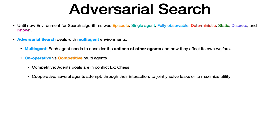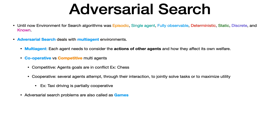In a cooperative setting, several agents cooperate to maximize utility or solve a task jointly. For example, in taxi driving, drivers cooperate to avoid accidents — though it becomes partially competitive when competing for parking. Adversarial search algorithms are also called games, since most use cases are some form of game.